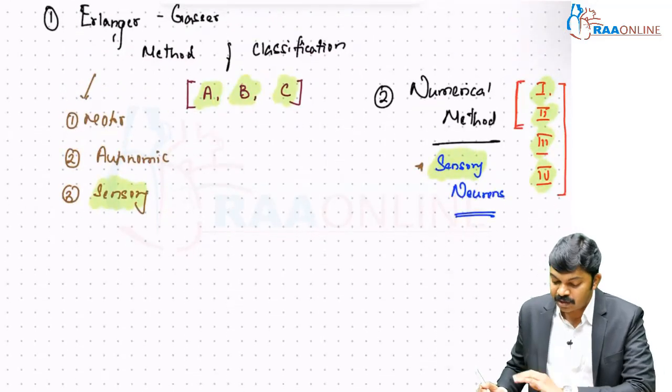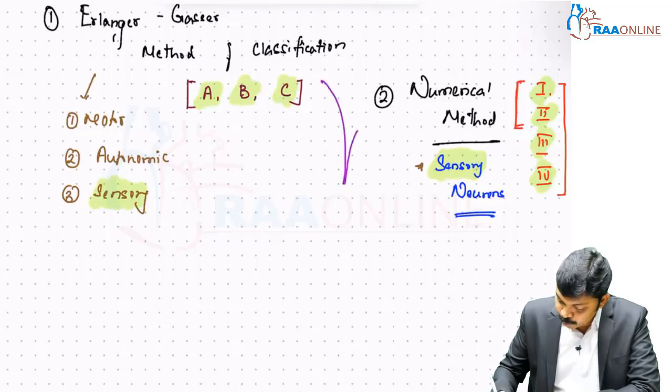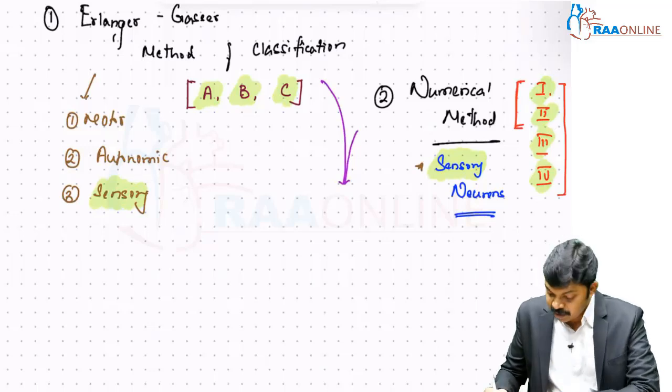So that's the basics of Erlanger-Gaser and numerical method. But finally, when it comes to these two methods, they adapt one basic property.